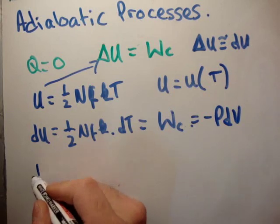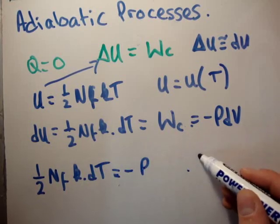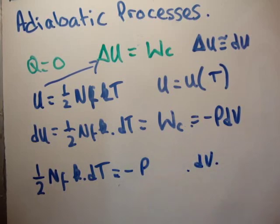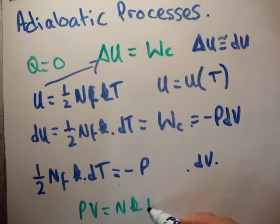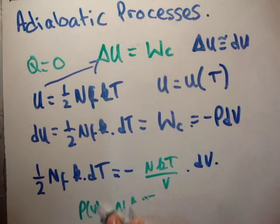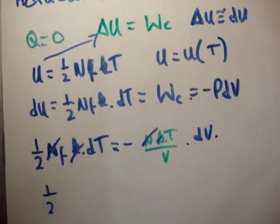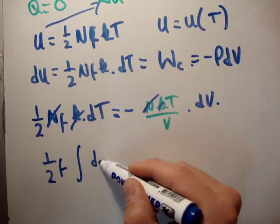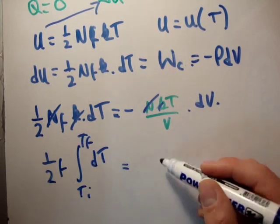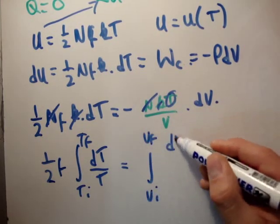So we have ½ · n · f · k · dT = −p · dV. To integrate this I need p as a function of volume, so I use the ideal gas law: p = nkT / V. Substituting that in and cancelling the nk on both sides, we're left with ½ · f · ∫dT/T from T_initial to T_final on the left, and −∫dV/V from V_initial to V_final on the right.